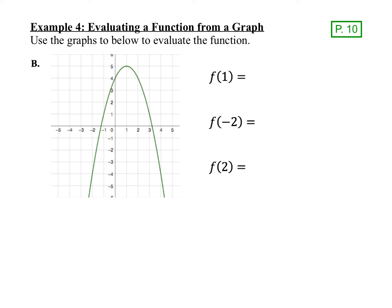Here's one more graph. Find f(1) by locating 1 on the x-axis and seeing where that hits the graph — the y value of that point is 5, so f(1) = 5. For f(-2), find negative 2 on the x-axis, look at where that hits the graph, and find the y value — it's negative 4. For f(2), find 2 on the x-axis; the y value of that point is 4, so f(2) = 4.